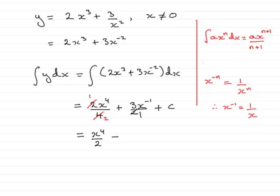So for this term, we end up with 3 times 1 over x, or simply 3 over x. And then we have the constant of integration, c.